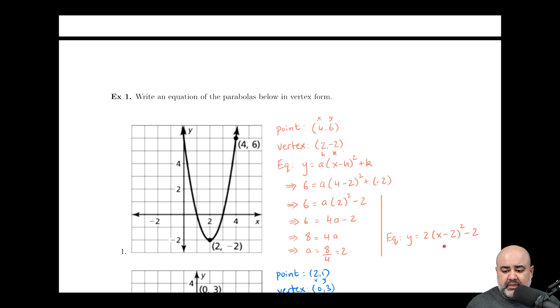So since we had h and k already, all we have to do is figure out what a is and we already did that, we found that a was two. So the equation of the parabola that passes through four comma six and has a vertex of two comma negative two is y equals two times the quantity x minus two squared minus two. And this equation is in vertex form, because from this equation, you can determine what the vertex is.